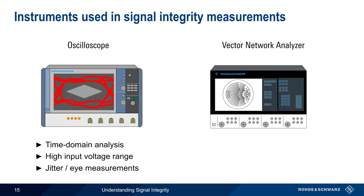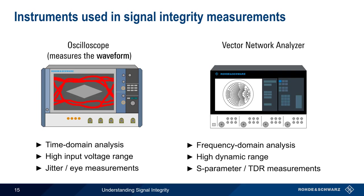A VNA, on the other hand, is primarily a frequency-domain instrument. VNAs have a high dynamic range, which is useful for measuring things like far-end crosstalk. VNAs can make S-parameter and TDR measurements as well. When it comes to signal integrity testing, one could say that oscilloscopes are used to measure the waveform, and VNAs are used to measure the channel.